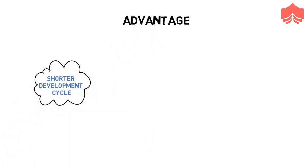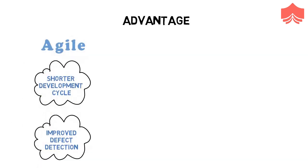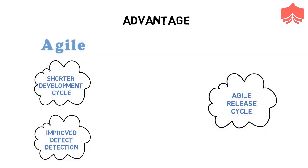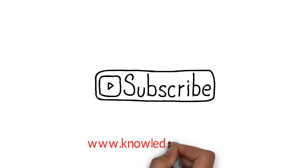Advantage. Agile offers a shorter software development cycle and improved defect detection. DevOps supports the Agile release cycle. So these were some of the differences between DevOps and Agile. We hope this video helped you understand both of them. Don't forget to subscribe to our channel for more such videos and visit our website for courses which can give a leap to your career. Thank you.